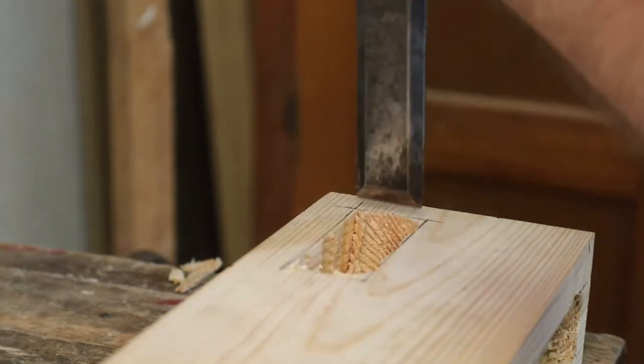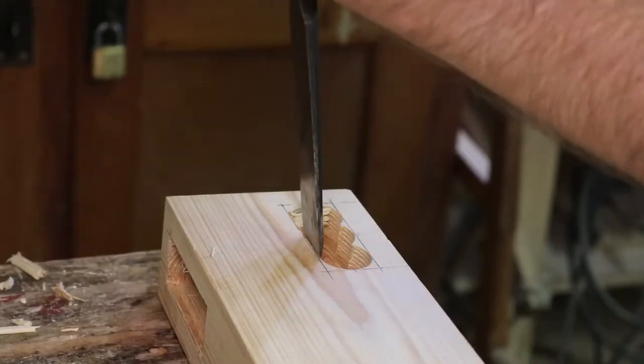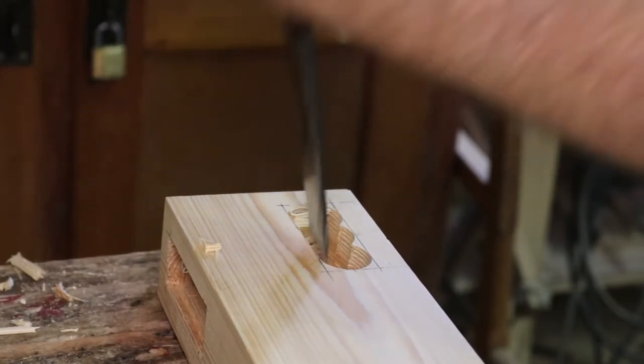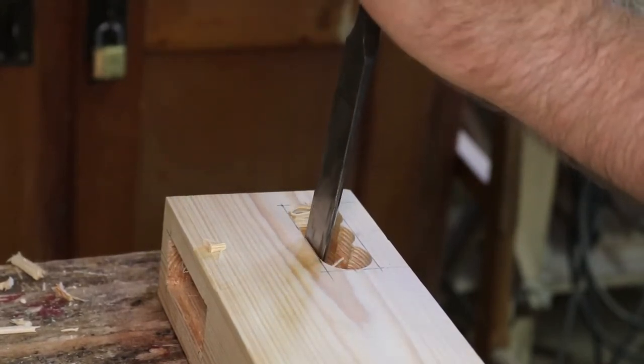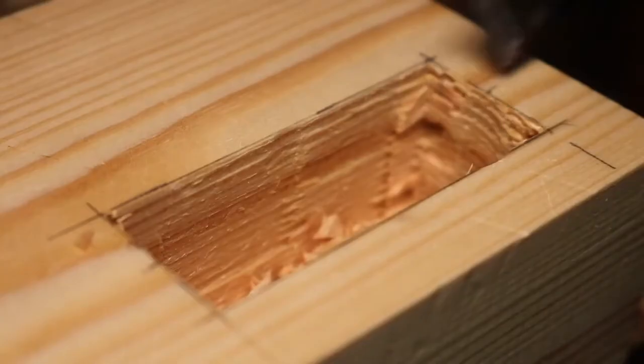When working with mortises and tenons it is important to prepare the edges with a marking knife before starting with the chisel. You can see that I did not know that when I started and I had a hard time either overshooting the edge or chiseling away too little material.